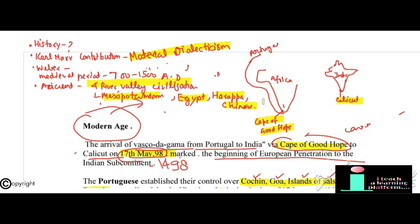Kublai Khan was contemporary to Muhammad bin Tughlaq of the Delhi Sultanate. The Delhi Sultans were Turks who were later replaced by the Mughals. The Mughals had approximately 75 percent Turkish and 25 percent Mongolian blood. During the medieval period, Europe declined but Asia was not dormant — it had the Arabic to Mongol empires. In India, the Mughal Empire was established with this mixed heritage.